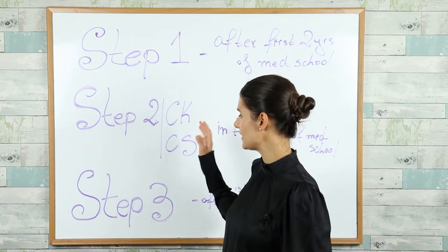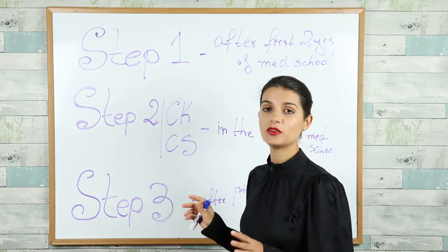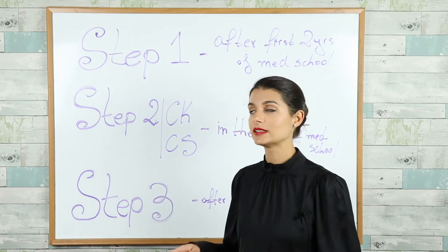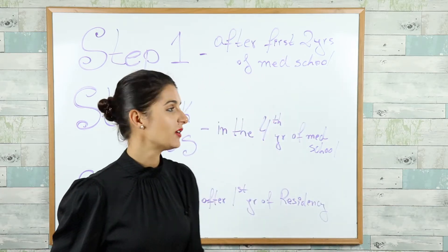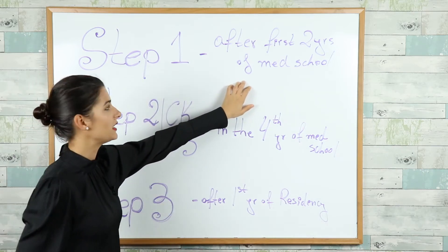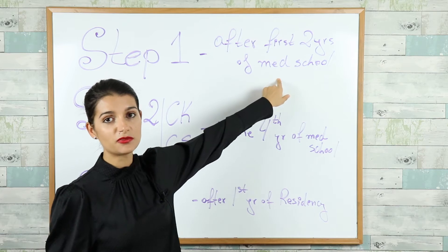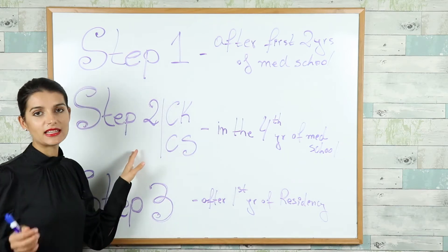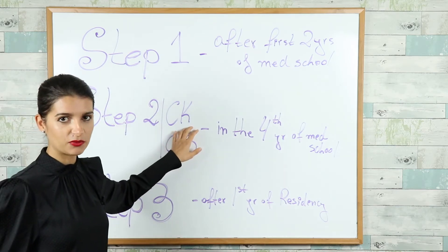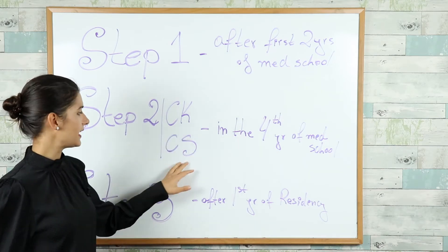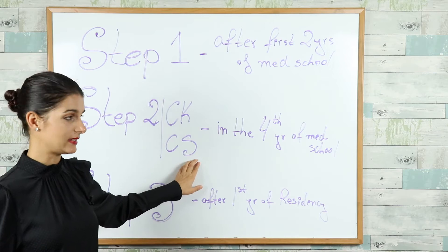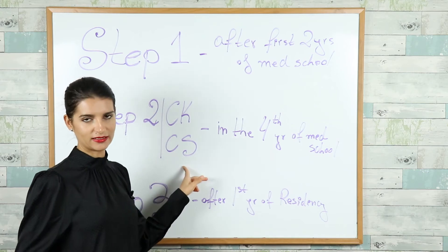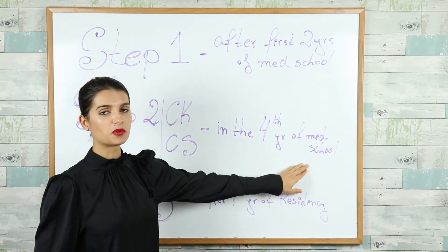Let me go over the step exams quickly — what they test and when people here in the US normally take them. Step one is taken normally after the first two years of medical school, which cover basic sciences, so step one tests basic sciences. Step two has two parts: step 2 CK, which is clinical knowledge — a computerized test — and CS, which stands for clinical skills, a practical exam. These are taken normally in the fourth year of medical school.